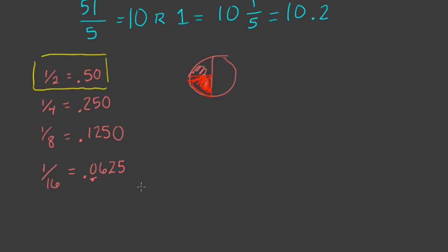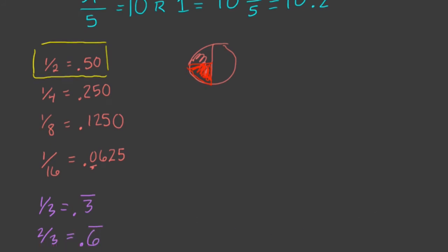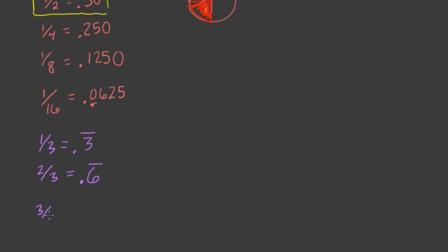Another real landmark fraction is 1 third. 1 third is equal to 0.3 repeating. So what would 2 thirds be? You would just double each of the threes: instead of 0.3 repeating, you get 0.6 repeating. Extending this, 3 thirds — if we tripled 0.3 repeating — we would get 0.9 repeating. Of course, 3 over 3 is also 1, and we run into this interesting scenario that 0.9 repeating equals 1.